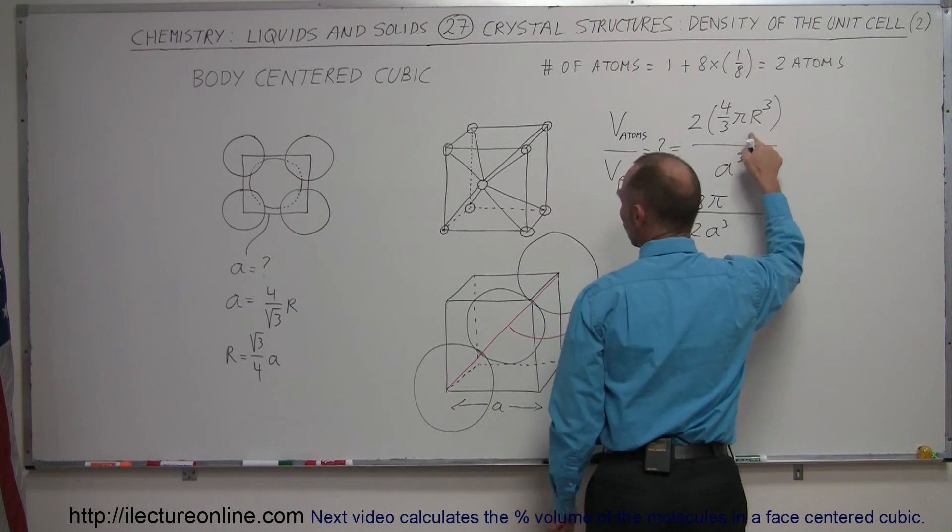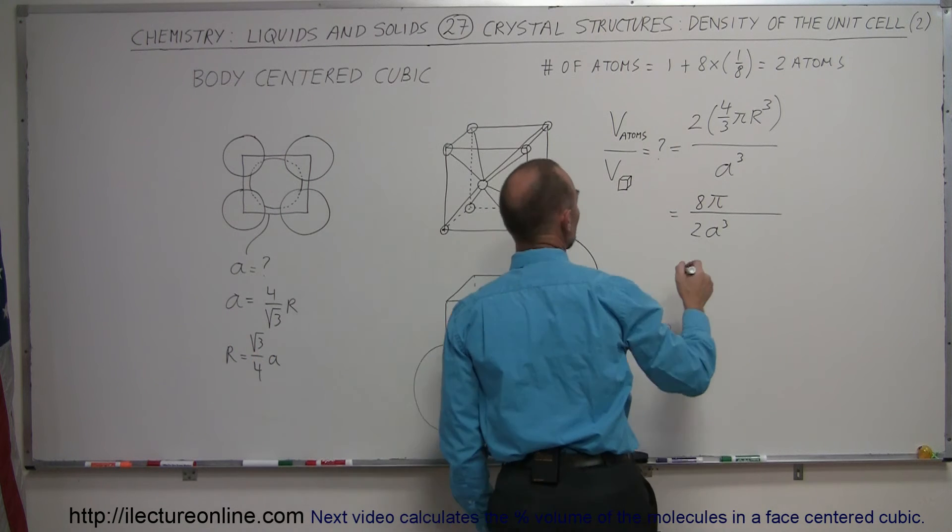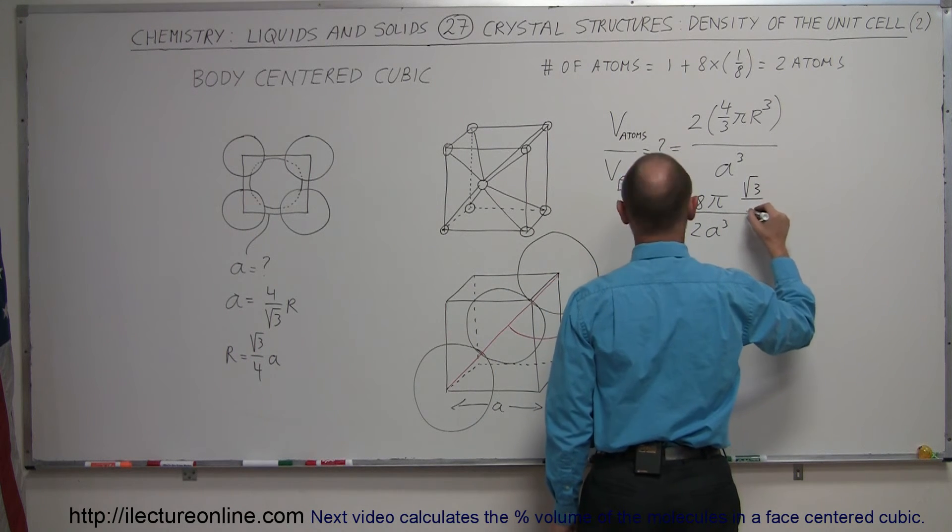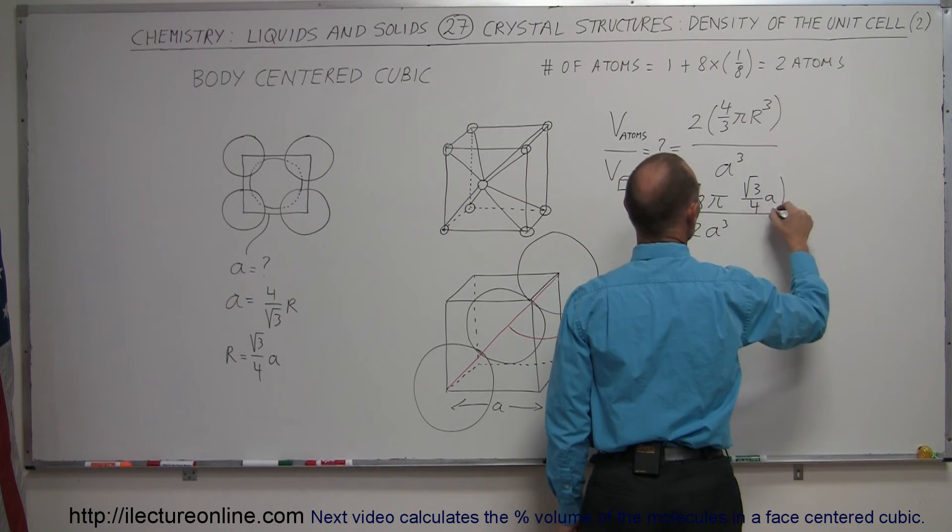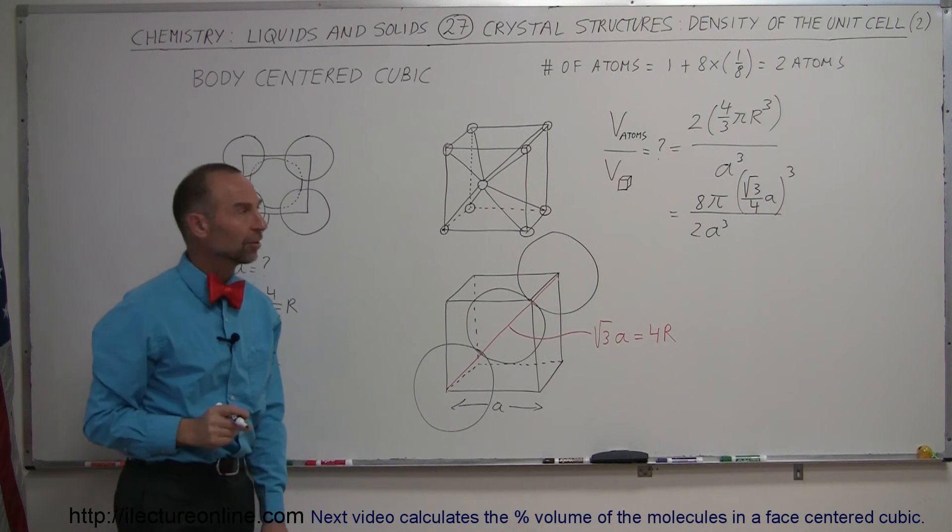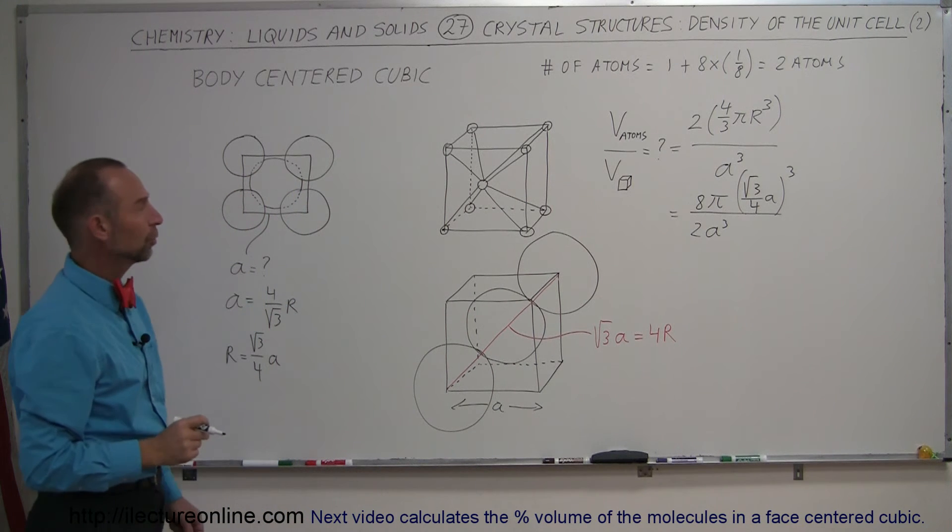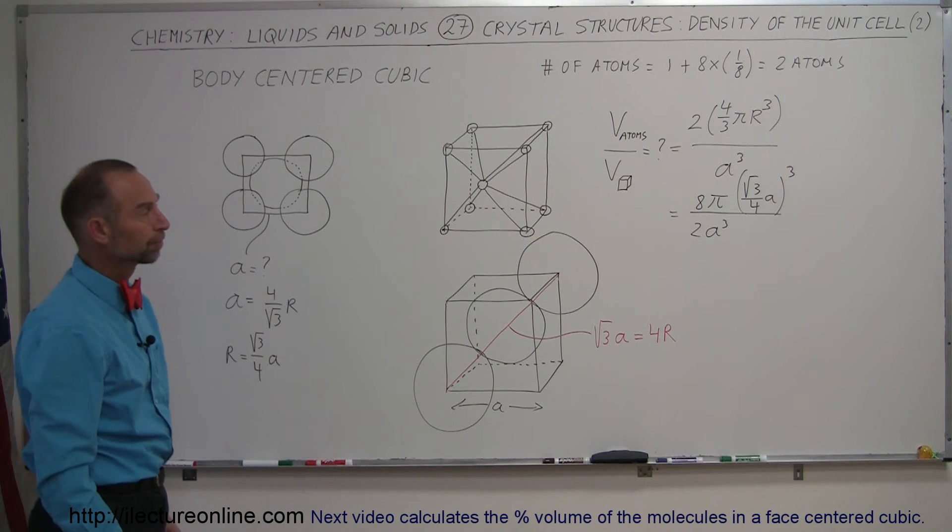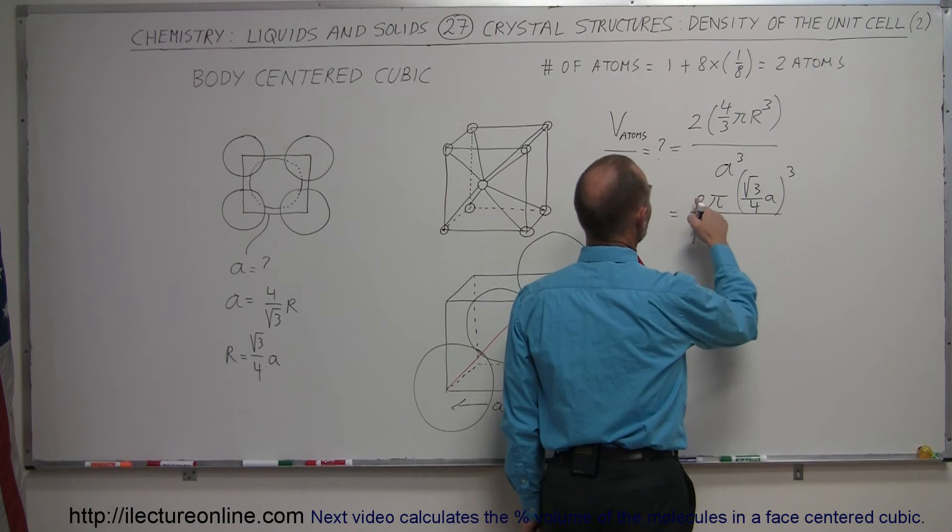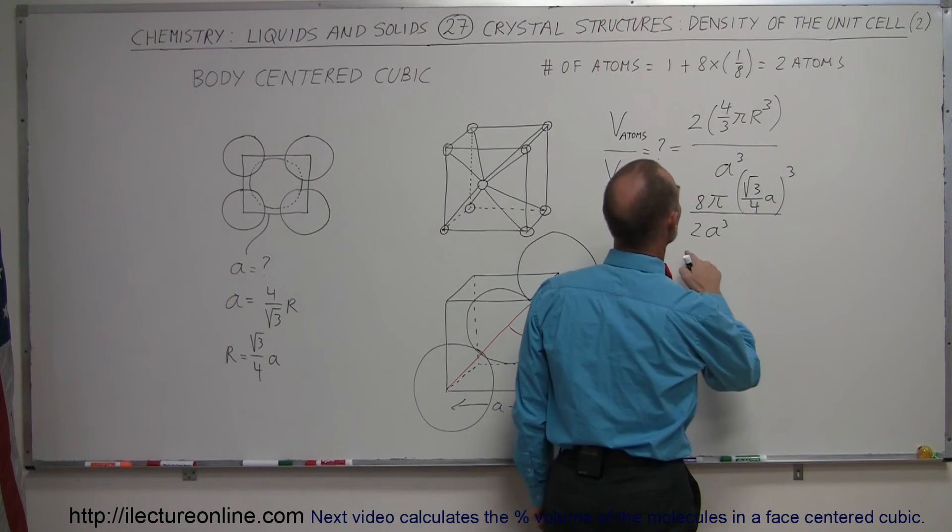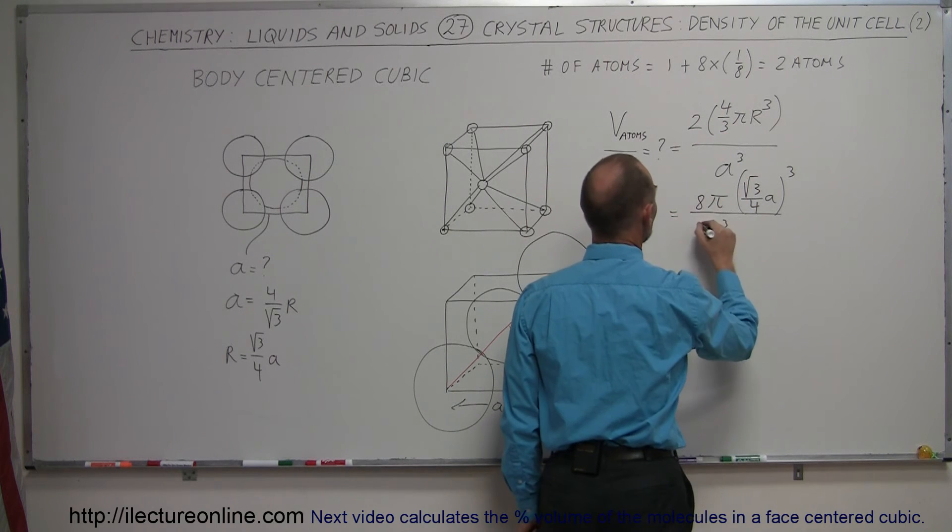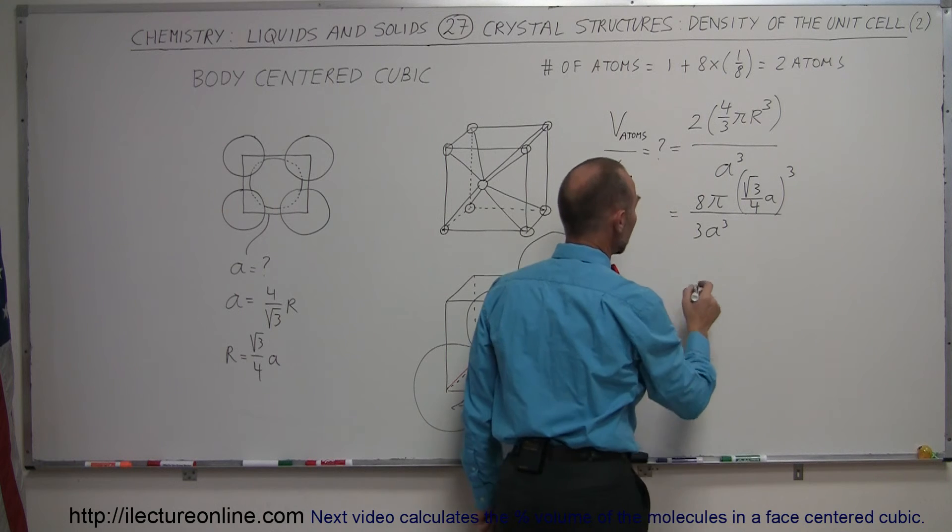And instead of r cubed, we're going to write this quantity cubed. So we have the square root of three divided by four times a, quantity cubed. We simply replaced r by what r is equal to in terms of the side of the cube. Continuing on, this should be a three, not a two. Two times four is eight divided by three.